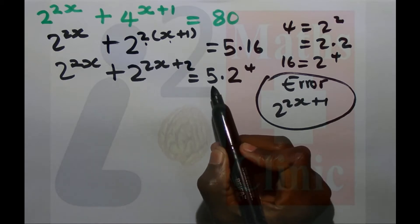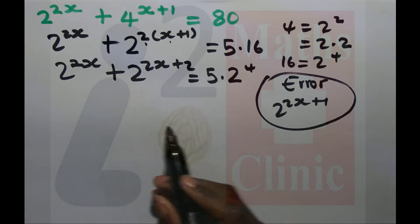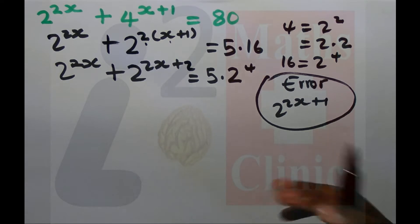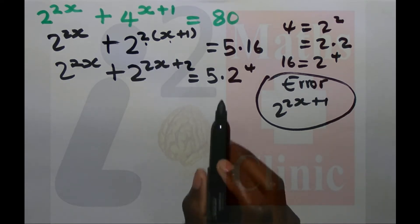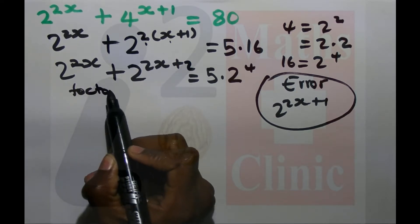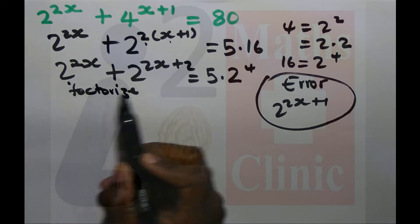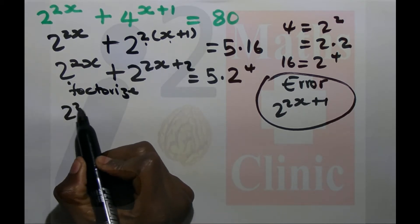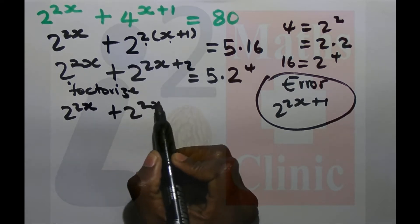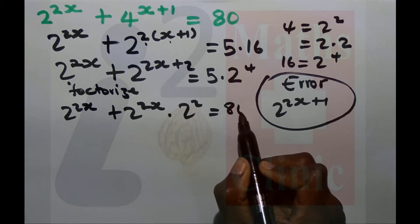Now we need to factorize. We need to find the common factor because we have 2 to the 2x. We can factorize by taking out the common factor 2 to the 2x.